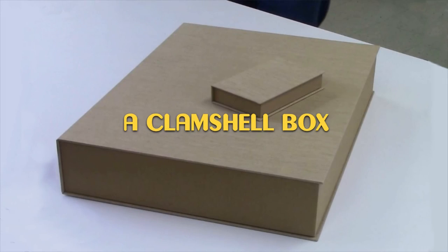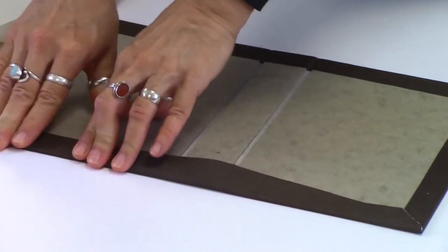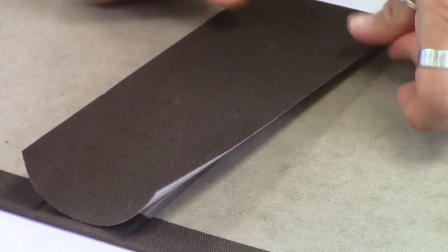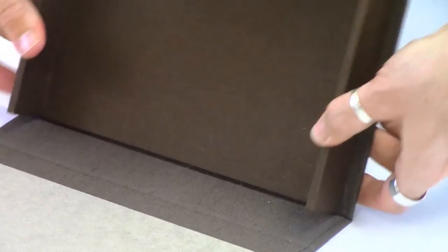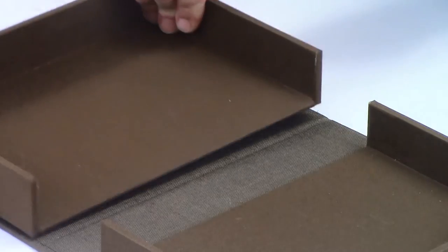Clamshell boxes are more laborious to make and usually used for the storage of rare and unique items. They are composed by a large base where two halves are attached.